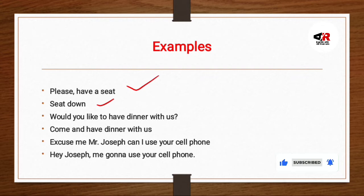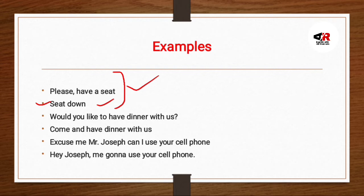Example dekhe. 'Please have a seat' — dusra example hai 'Sit down.' Ab yeh in dono mein fark kiya hai? 'Please have a seat' is a formal way — politeness hai, means aap etiquettes dikha rahe ho, ethics dikha rahe ho. Yeh aap apne parents ke liye, teachers ke liye use kar sakte ho. Lekin 'Sit down' — yeh dost ke liye ya bachon ke liye use kar sakte ho. So this is politeness, and this is not.